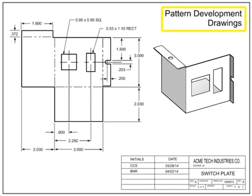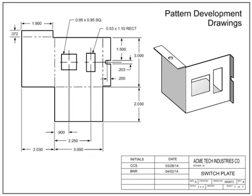Pattern development drawings detail the dimensions of a part when it is flat, as well as the final shape it takes, typically by bending or folding. Pattern development drawings are frequently used where sheet metal, fabric and leather, tubing, plastic, or cardboard is the raw material. Pattern drawings show not only the dimensions of the unfolded item, but also detail where the fold lines are.